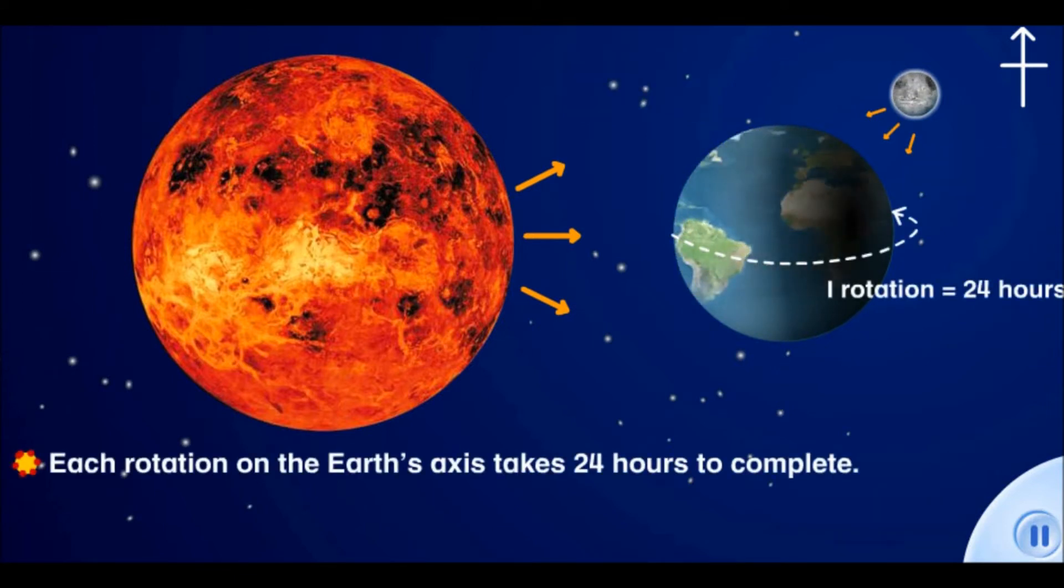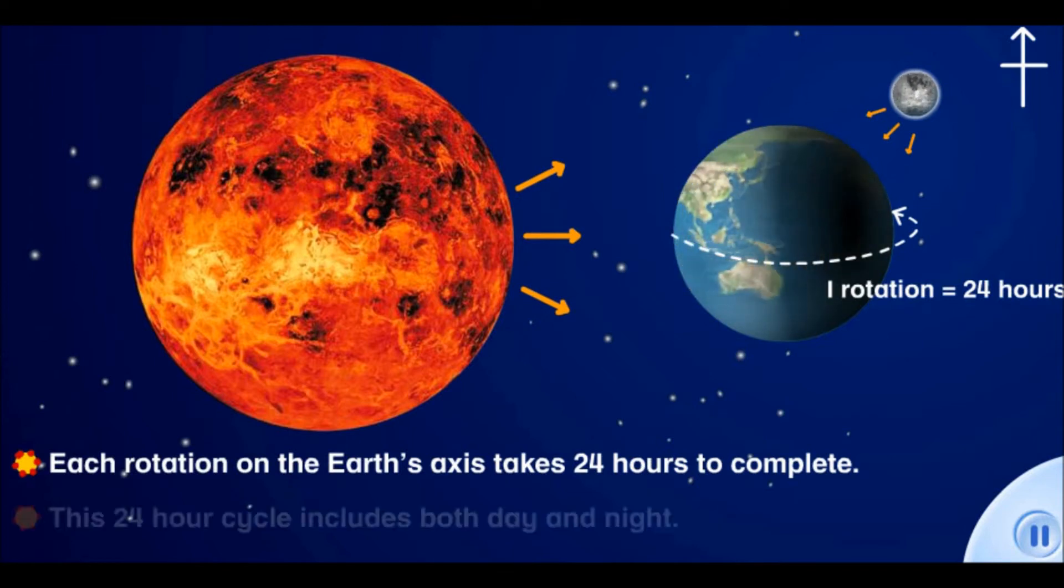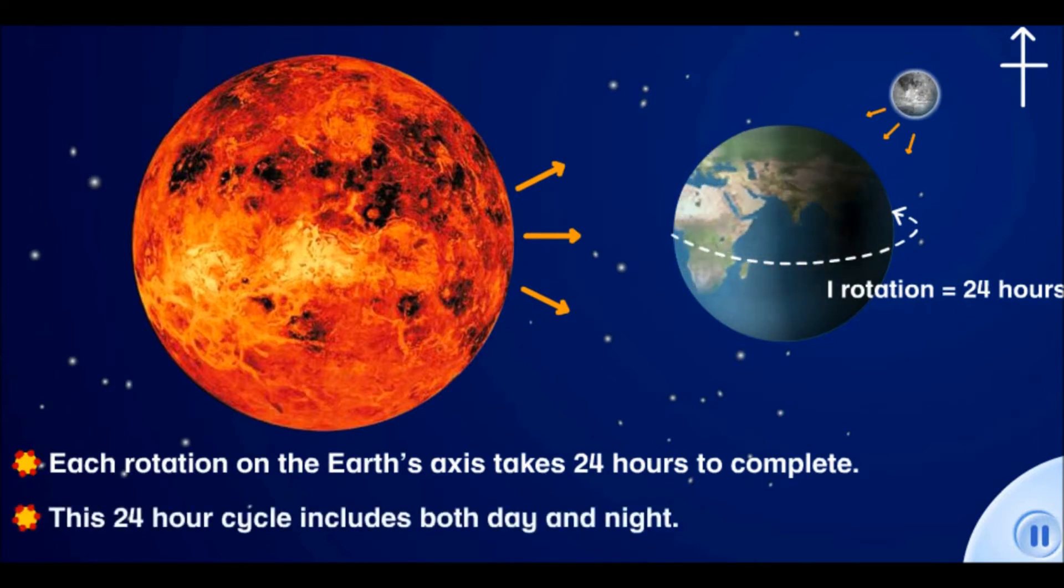Each rotation on the Earth's axis takes 24 hours to complete. This 24-hour cycle includes both day and night, and makes one day.